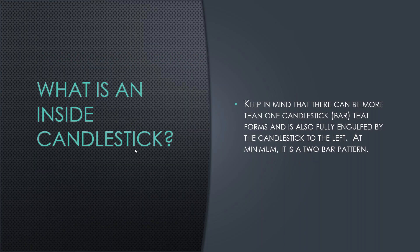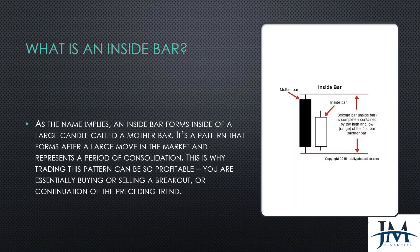Keep in mind that there can be more than one candlestick bar fully engulfed by the candle to the left. At minimum, this is a two-bar pattern — bar one and bar two. But we could have a third, fourth, or fifth bar. All we're saying is that if you drew a line across the high and low of the mother candle, all subsequent candles would be inside bars.